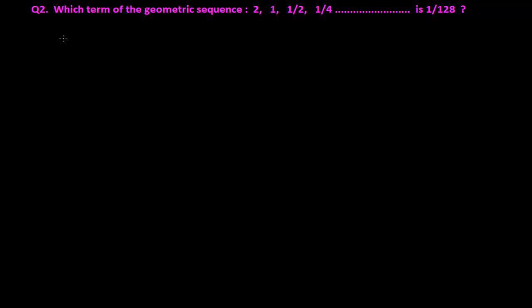Let me first write the sequence we have got. We have the sequence 2 (that's our first term), 1 (our second term), 1/2 (our third term), 1/4 (that's our fourth term), and so on.